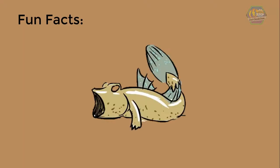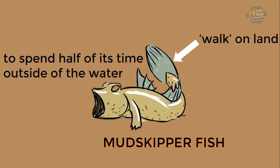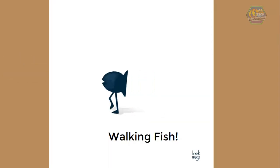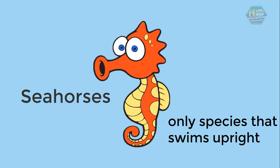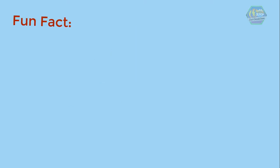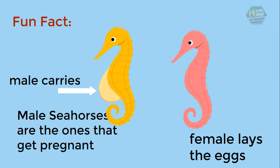The mudskipper fish has the ability to spend half of its time outside of water and actually uses its fins to walk on land — a walking fish! Seahorses are a type of fish and are the only species that swims upright. And as a fun fact, male seahorses are the ones that get pregnant — once the female lays the eggs, the male carries them until they hatch.